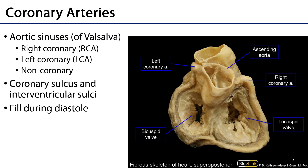The coronary arteries begin their journey at the root of the aorta — that's the portion of the ascending aorta most proximal to the heart. There is a right coronary sinus of Valsalva and a left coronary sinus of Valsalva that feed the right and left coronary arteries respectively.